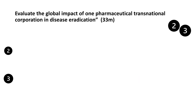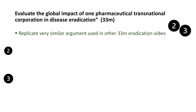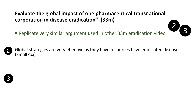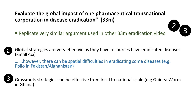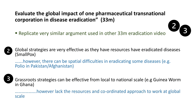I've talked in another video about strategies for global eradication — go back and watch that in depth — but I can use similar arguments here to fill out the rest of this essay. For my second argument I could talk about global strategies being very effective, as they have the resources to eradicate diseases like smallpox, but that there are spatial differences in eradicating some diseases, with polio being a good example. For my third argument, grassroots strategies are effective — they can work from the local level all the way up to national, using guinea worm in Ghana as an example — but they lack the resources and cooperation to work at a global scale.